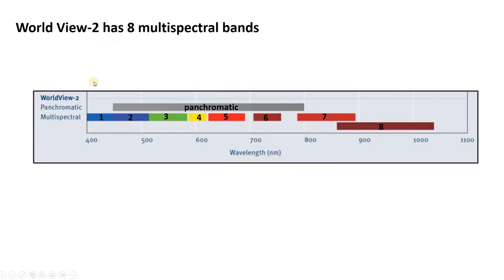The main image we're using is a WorldView-2 image with eight multispectral bands — bands 1 through 8. Each one records light measured in a different wavelength interval. Band 1 is 400 to 450 nm, band 2 is 450 to 510, and so on.